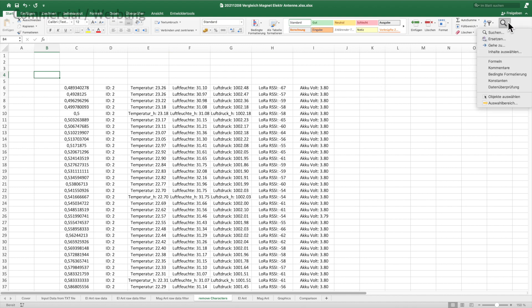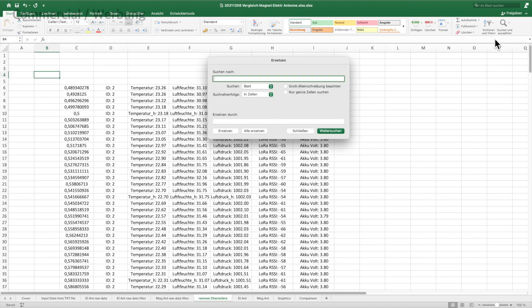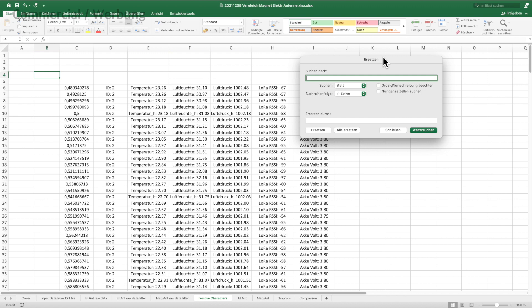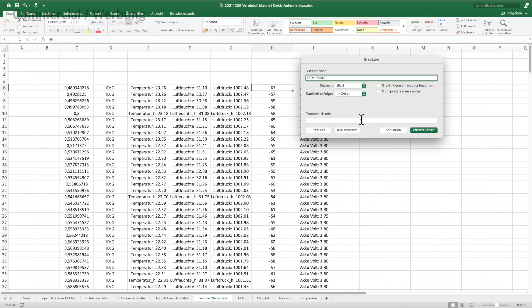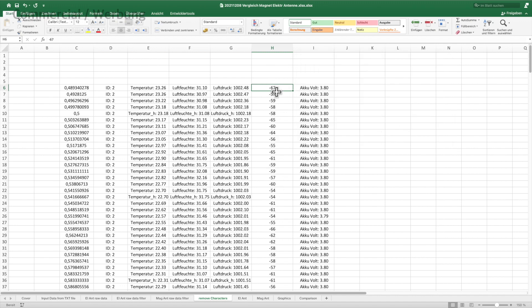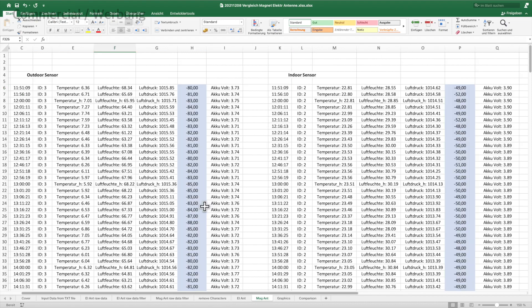In other words, we just want to keep the numbers in the cells and we have to find a way to delete the other characters. For this purpose, we use the find and replace function. We search for the text LoRa RSSI, including the colon and the blank at the end, and then we replace it by nothing. We let it do the replacement for all.